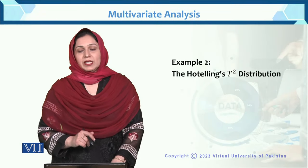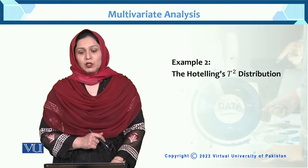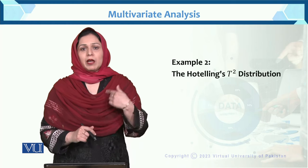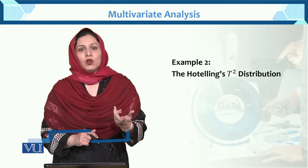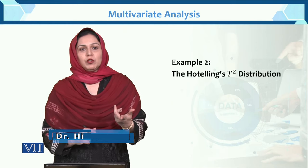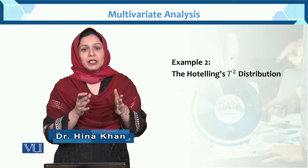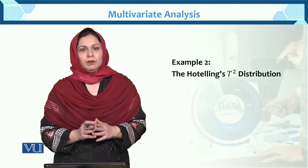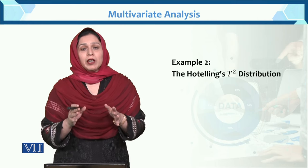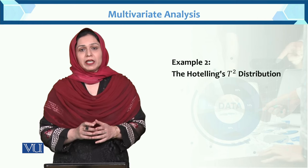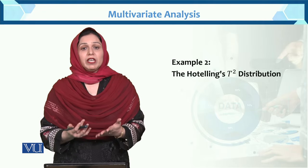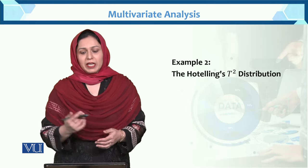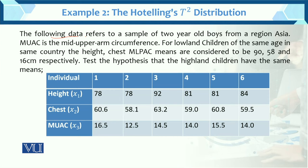Dear student, this is example number 2 of the Hotelling T-square distribution. In Example 1 we saw the Hotelling T-square distribution when we had the mean vector and variance-covariance matrix given. And if we have raw data, then how do we determine the mean vector and variance-covariance matrix? We will see that in this example.